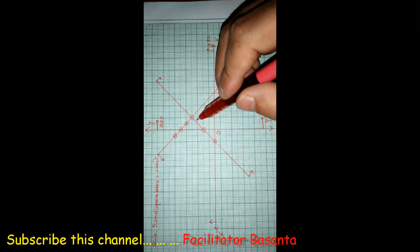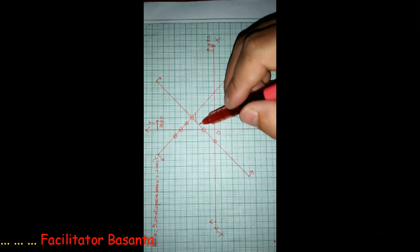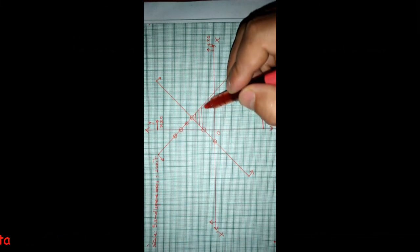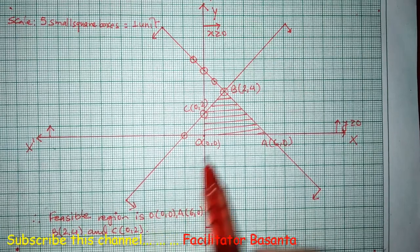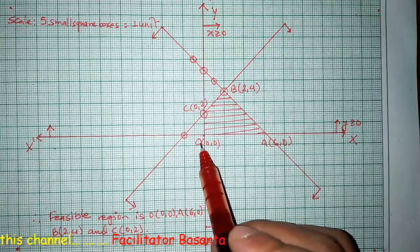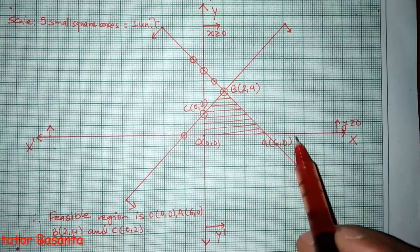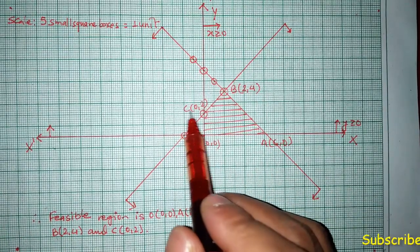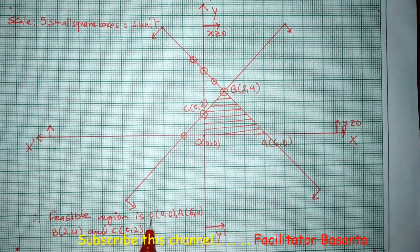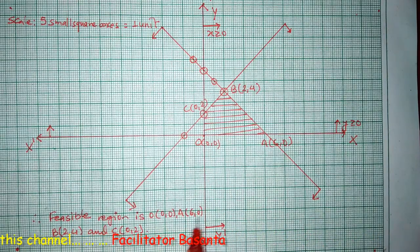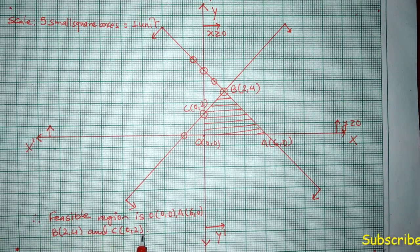The common feasible region has four corner points: O(0, 0), A(6, 0), B(2, 4), and C(0, 2). Therefore, the feasible region is bounded by vertices O(0, 0), A(6, 0), B(2, 4), and C(0, 2).